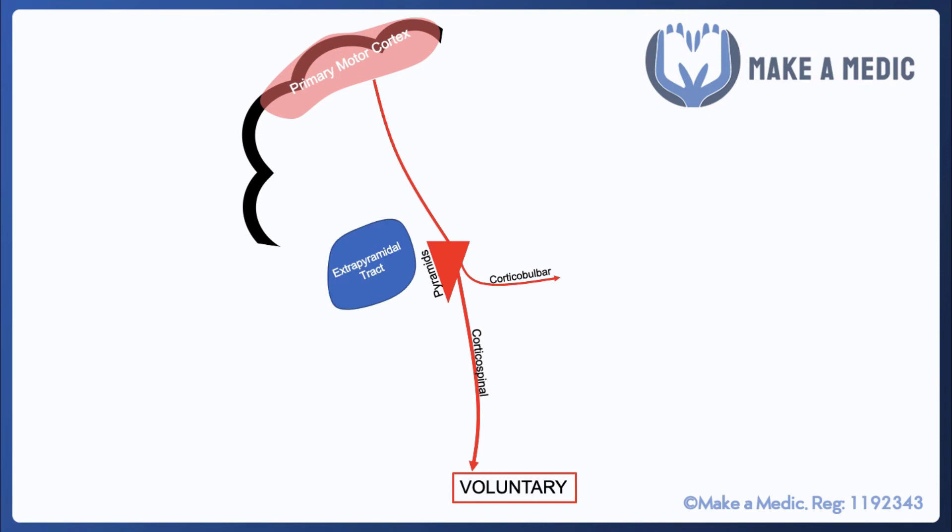The extrapyramidal tract, on the other hand, is not necessarily a discrete anatomical entity within the brain. It actually consists of several different parts of the brain including the basal ganglia, the cerebellum, and the vestibular nucleus. However, for the sake of simplicity, I've shown it as one blue blob on this diagram. What the extrapyramidal pathway does is that it moderates the signals coming down from the primary motor cortex and makes the movements far more fluent. So this is an involuntary system.